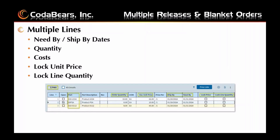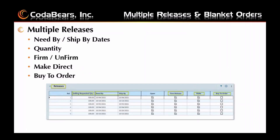When orders are created with multiple lines, the need buy and ship dates are used to show when each line should be shipped for a standard order. These dates are usually the same or close in time, and the quantity and price are set per line. With multiple releases, the need buy and ship by dates will not be the same per release. Quantity is entered per release, which can be checked as firm or not firm, make direct or not make direct, and buy to order or not.